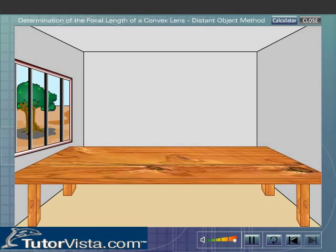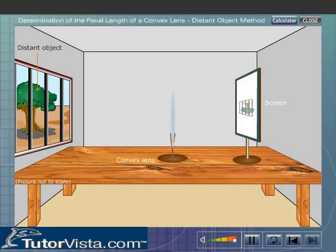Let us now determine the focal length of the given convex lens by distant object method. Arrange the lens and the screen as shown here. Choose a tree outside the laboratory as the distant object.